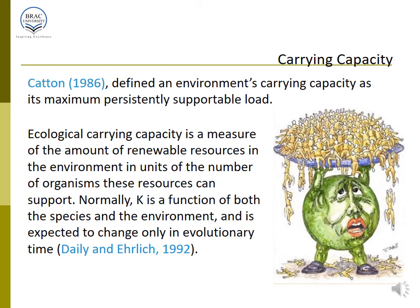Ecological carrying capacity is a measure of the amount of renewable resources in the environment, expressed in units of the number of organisms those resources can support. For example, if there is a biodiversity of 10,000 species in a city, every species has its own limit for bearing stress. If they are unable to take those loads, the system starts collapsing. Normally K is a function of both species and the environment and is expected to change only on evolutionary timescales. Carrying capacity can be increased through succession, but it is negligible because it takes time to regenerate the overall system.